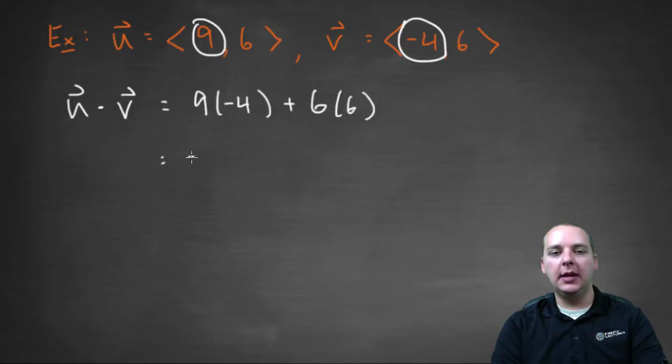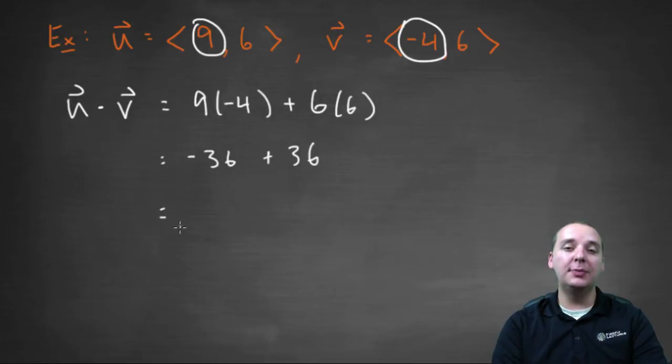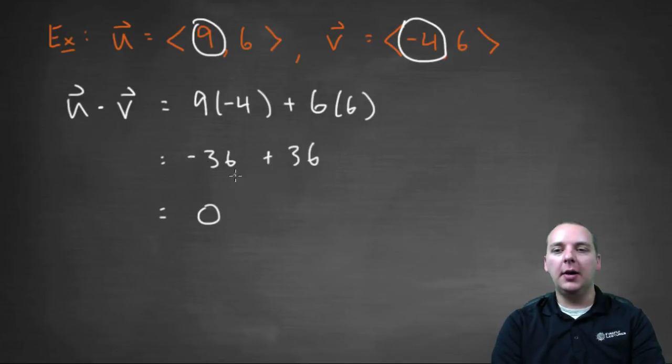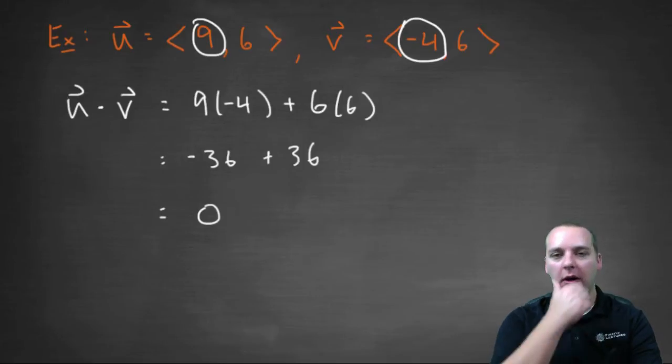So that would be negative thirty-six, plus positive thirty-six. So for this particular example, our answer is zero. For another example it may not be zero, but for this one it is zero. Now I picked this example on purpose, because I actually wanted to point something out.